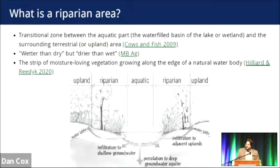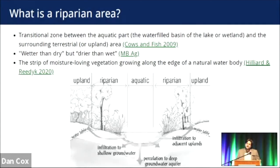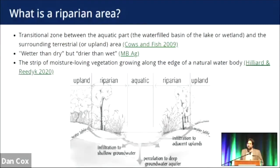Let's start with what might be an easy question: what on Earth is a riparian area? When I was making this presentation, I typed it into Google, and a whole bunch of different sources came up. The one I typically use is the idea of a transition zone — what separates the land and soil from the aquatic or water environment — it's that in-between zone. One of my favorites I discovered was the description 'wetter than dry, drier than wet.' And the last one looks at vegetation — what kinds of plants do we see growing along the edge of a natural body of water.